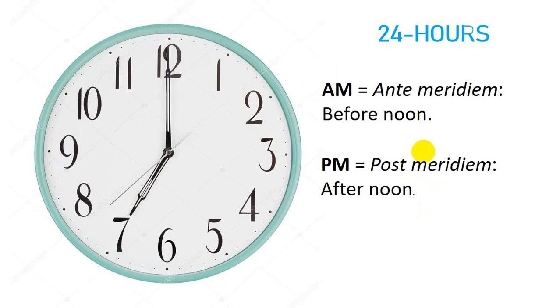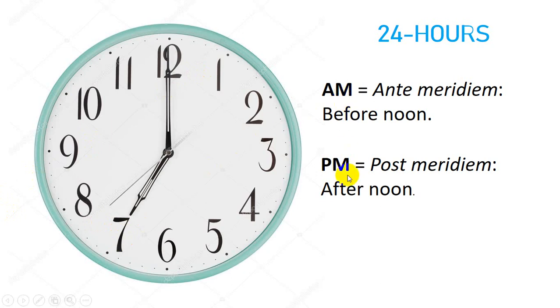Bismillahirrahmanirrahim and Assalamu Alaikum. I hope all of you are doing fine. Today our topic is about time, and in this lesson we are going to learn the concept of AM and PM. As you all know, there are 24 hours in a day, but on a clock you will only see 12 digits. So how can you distinguish between the time in the morning and the time in the evening? For that, we will use AM or PM.